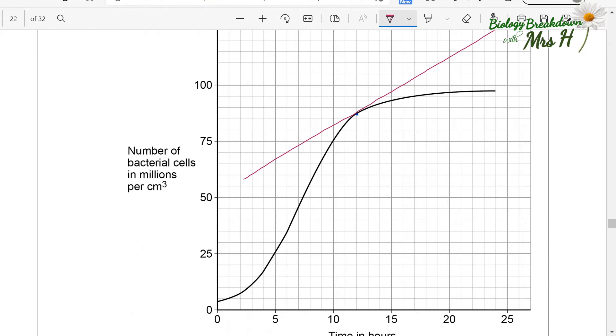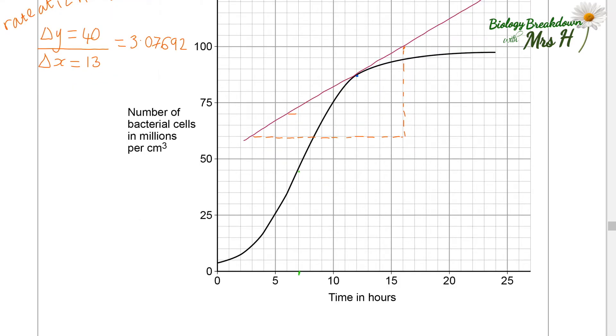So we need two points where this tangent line crosses exactly just to make it simple for ourselves. So I can see at 16 hours my tangent line crosses through 100 millions of bacterial cells per centimeter cubed and at three hours my tangent line is crossing very neatly through 55, 60 millions bacteria. Okay so my change in y is actually 40 divided by the change in x so the change in x is actually over 13 so that gives us a rate of 3.07692 millions of bacterial cells per centimeter cubed per hour.